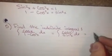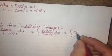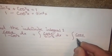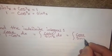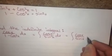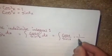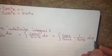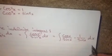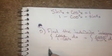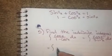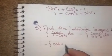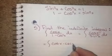We can rewrite this as cosine x over sine x times 1 over sine x, which is the same thing as cotangent x times cosecant x.